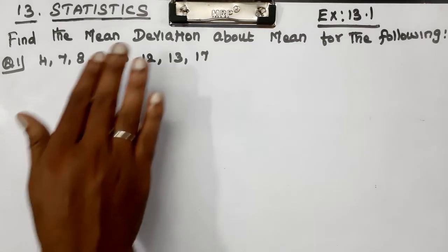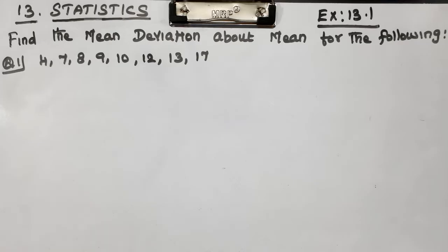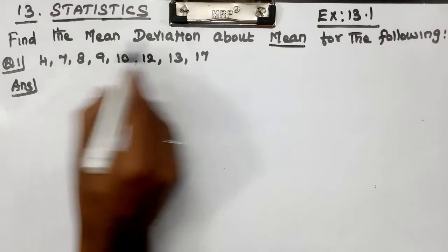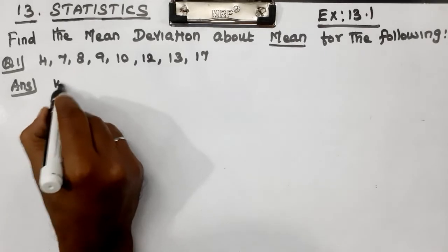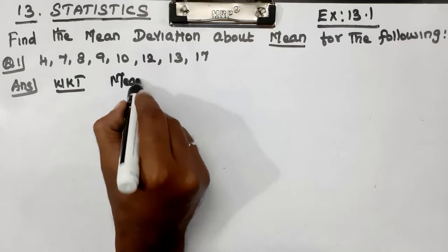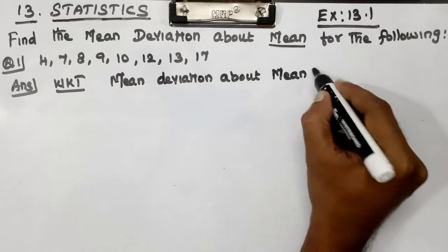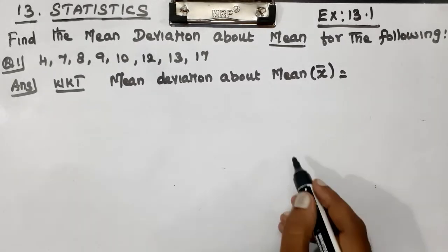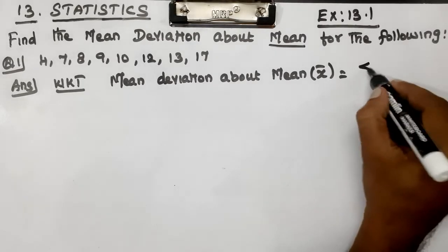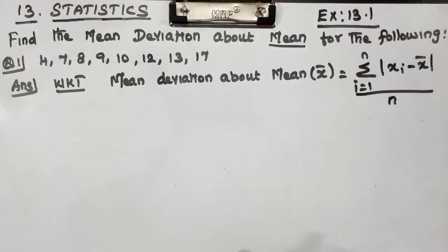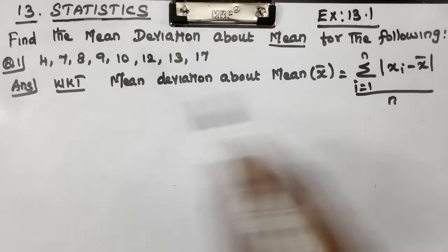Let's talk about the data and the mean deviation. The formula for mean deviation about mean is: summation from i equal to 1 to n of modulus of x_i minus x_bar, whole divided by n. Here, n is the number of observations, x_bar is the mean, and x_i is the value of each observation.